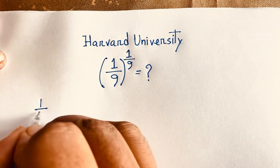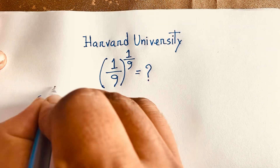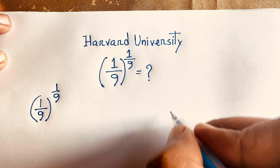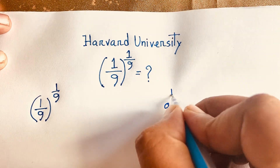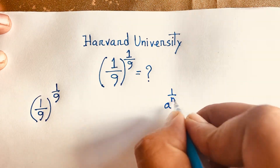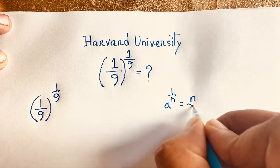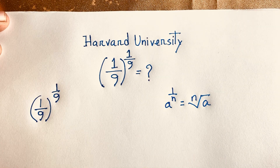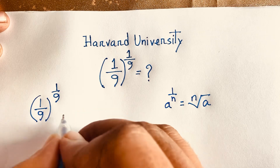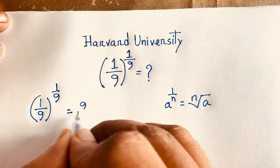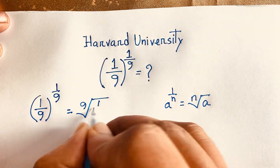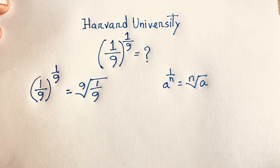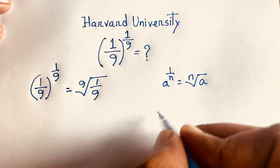Our question is (1/9) to the power 1/9. We know the exponential law: a to the power 1/n is equal to the n-th root of a. According to this law, this expression will be the 9th root of (1/9).